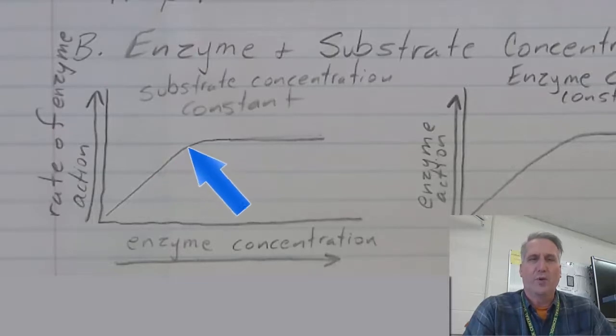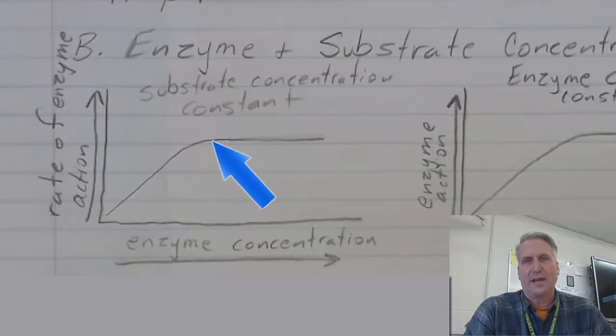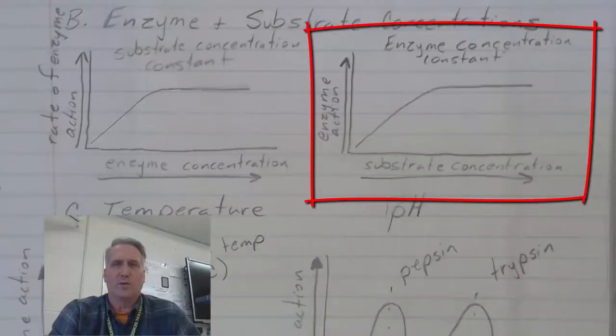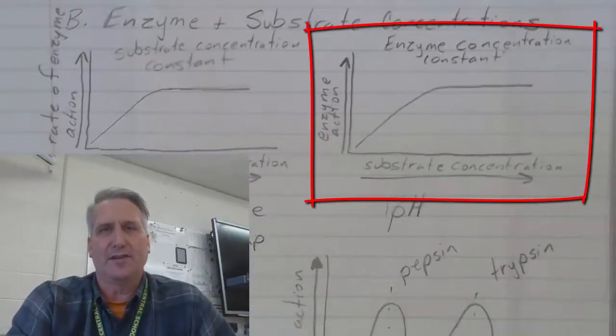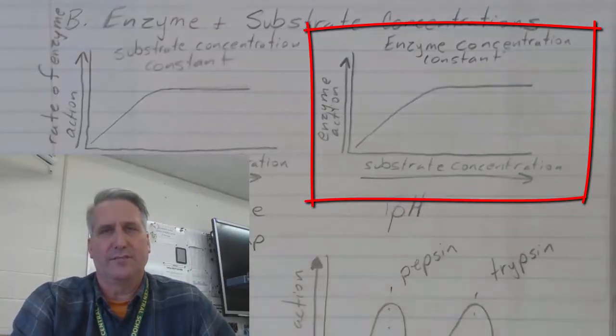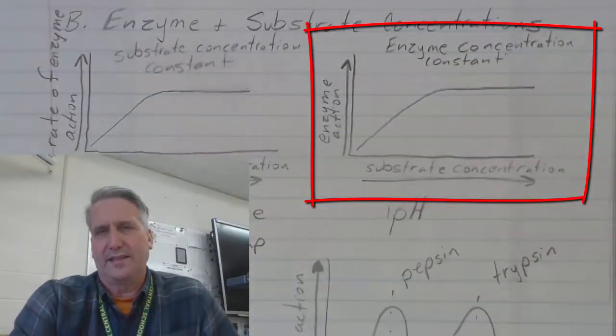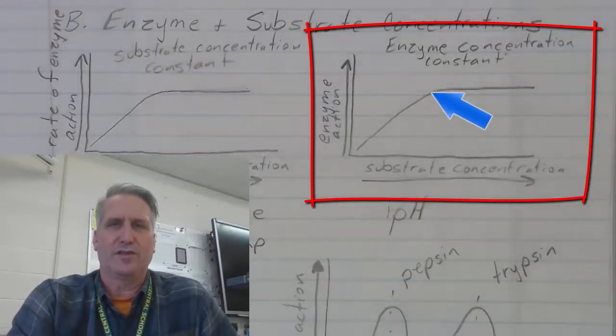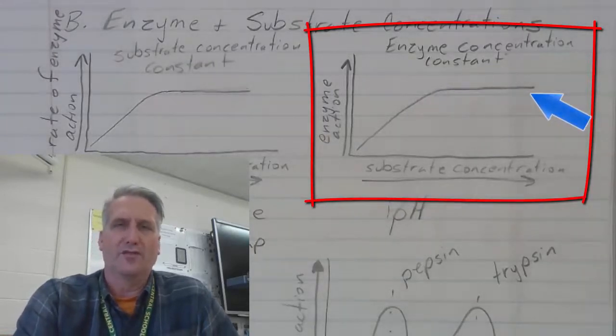Once you reach a certain point, all the substrate is being catalyzed as quickly as possible and adding more enzyme will not increase the rate of reaction. The same relationship exists when you have a fixed enzyme concentration and you increase the substrate concentration. As the substrate concentration increases, the reaction rate increases to a certain point and then levels off.